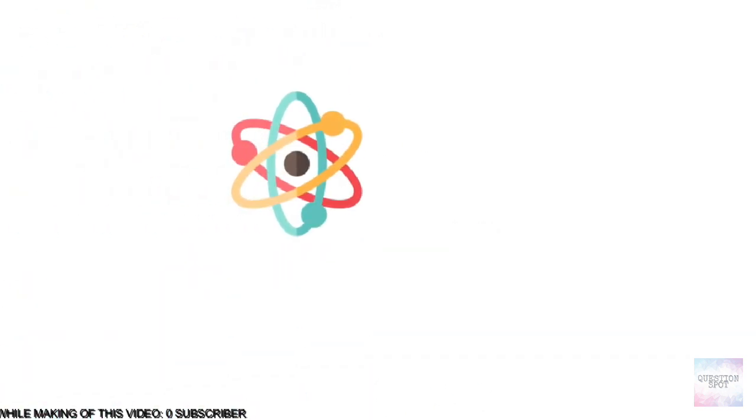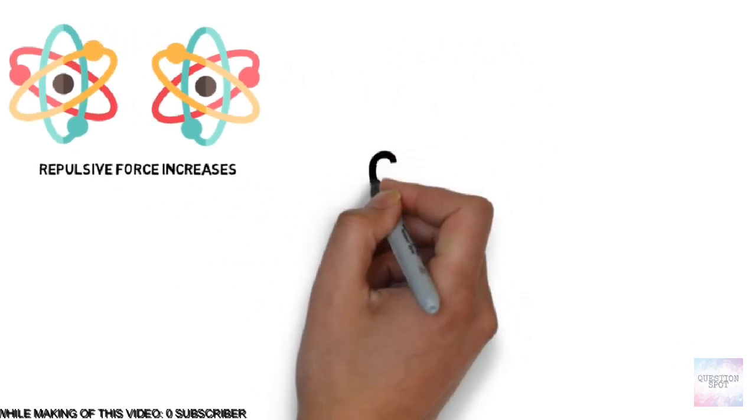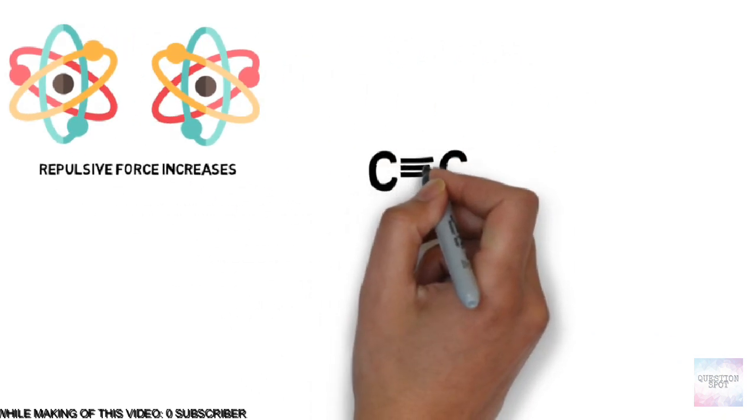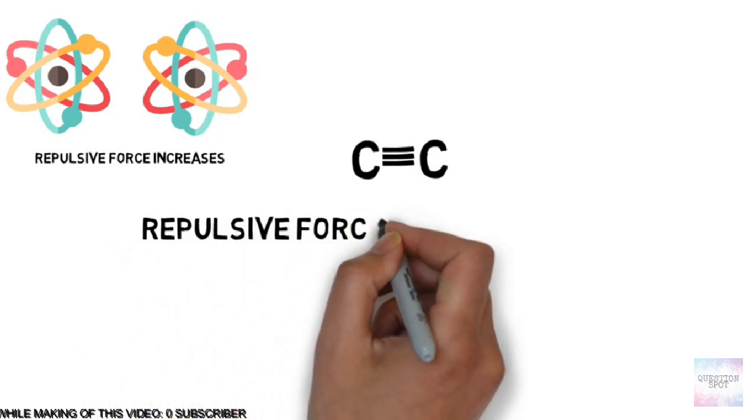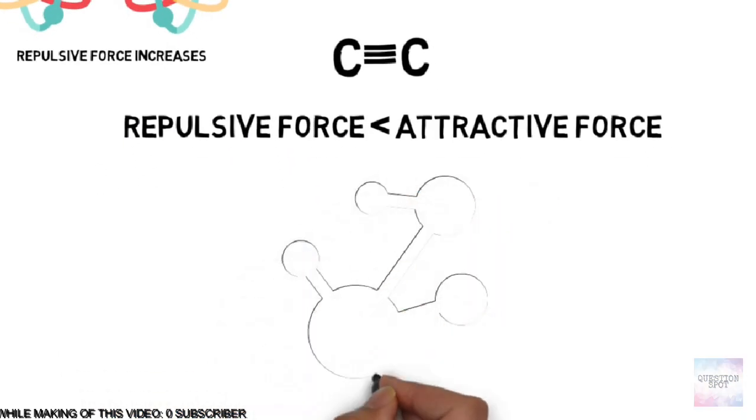Thus when nuclei come close, the repulsive force increases. Till triple bond, in any atom, repulsive force is smaller than the attractive force of electrons and protons. Thus carbon can make triple bonds easily.